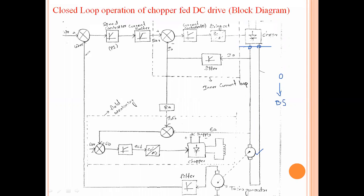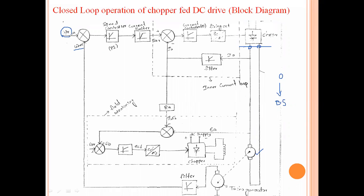The actual machine speed is compared with the reference speed of the machine. Omega_R represents the reference speed, also called the set speed. This reference speed is our choice — if you want to operate the machine at 1500 RPM, then the set speed or reference speed will be 1500 RPM. These two are compared and a speed error is produced.